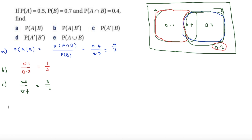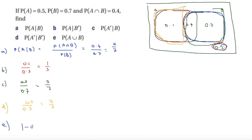For Part D, P(not A | not B): not B is the A-only and outside regions, totalling 0.3. Not A within that is 0.2, so 0.2 over 0.3 equals 2/3. For Part E, P(A or B) is just everything minus the outside 0.2, so 1 minus 0.2 equals 0.8.